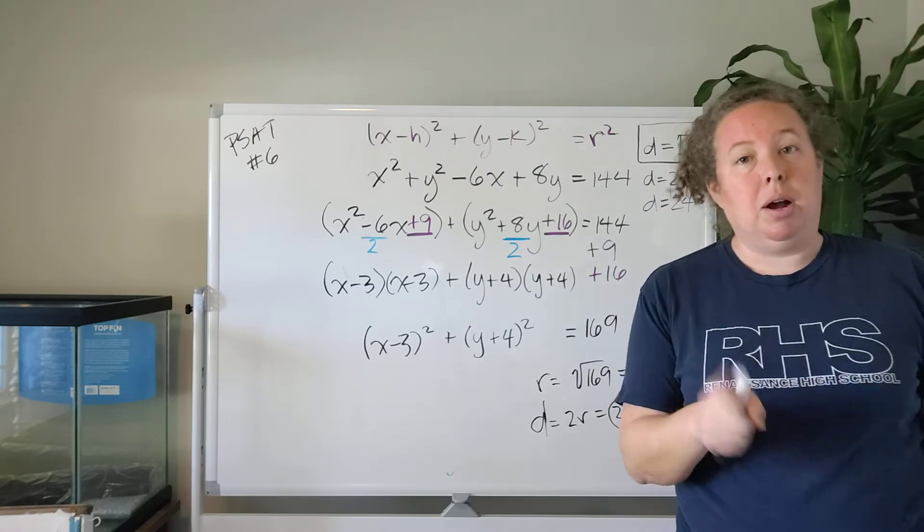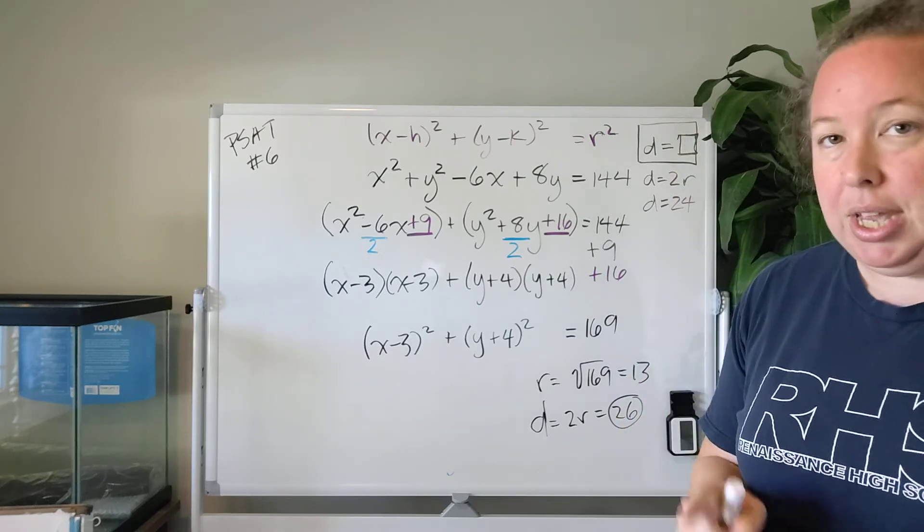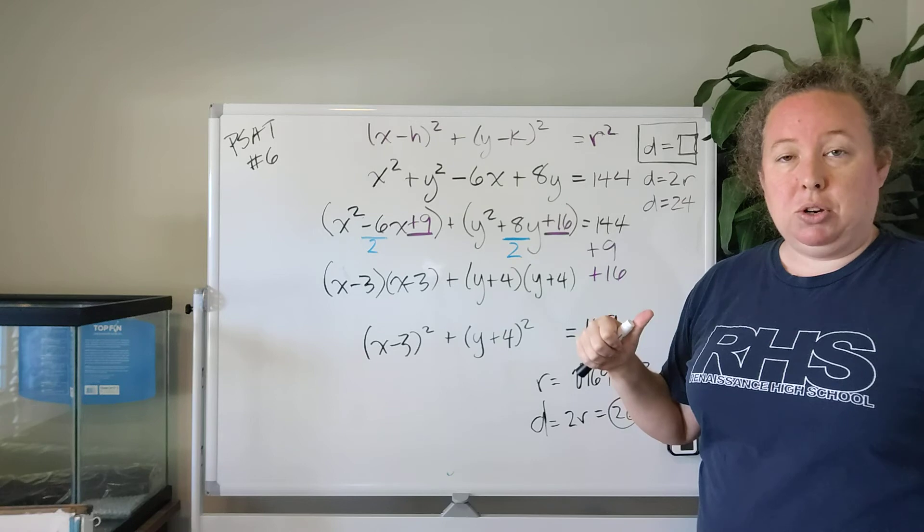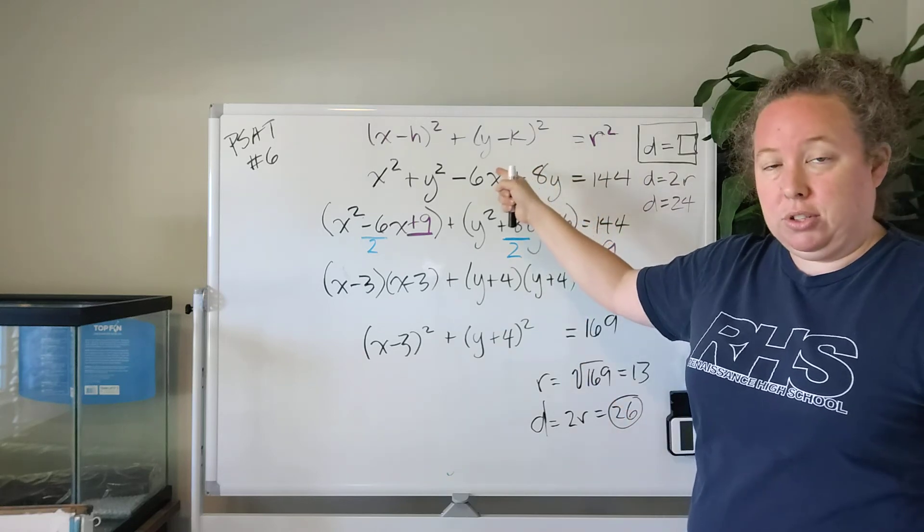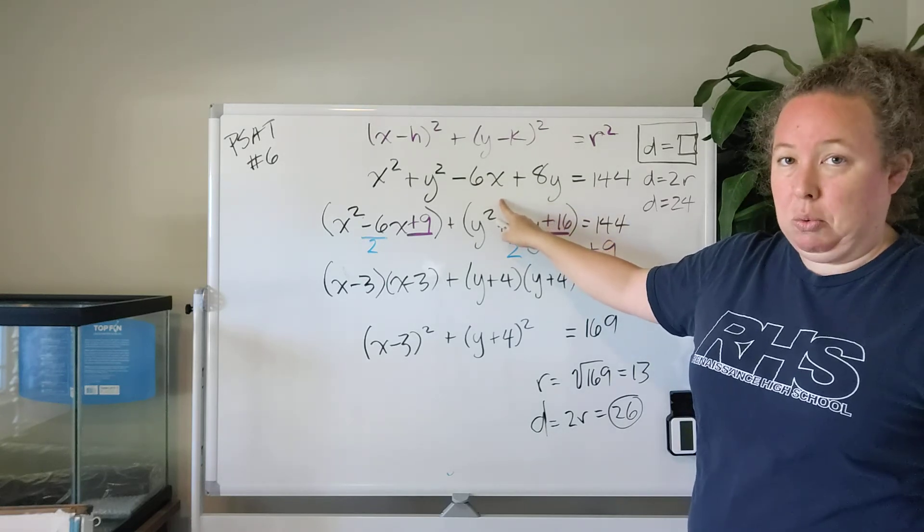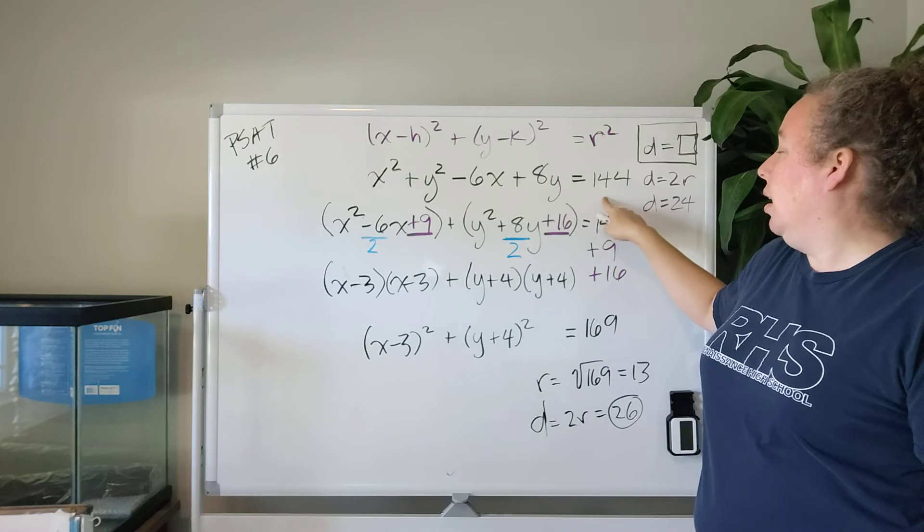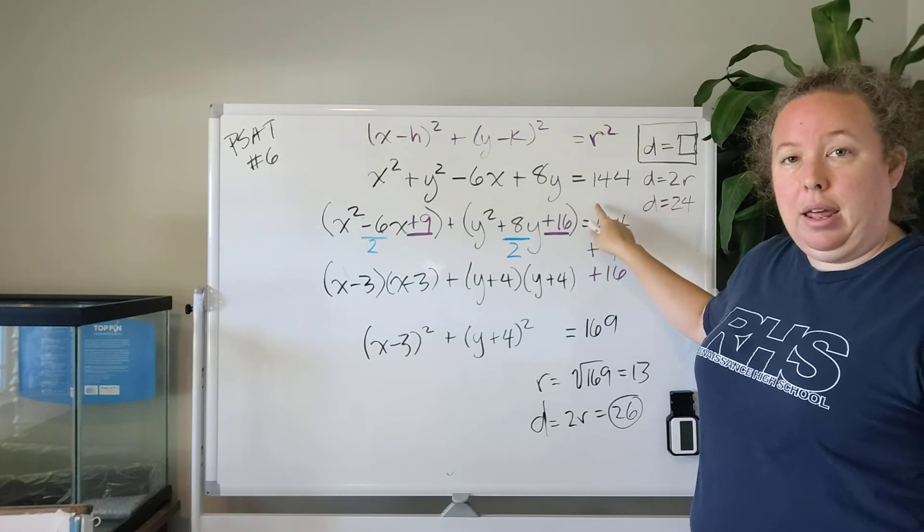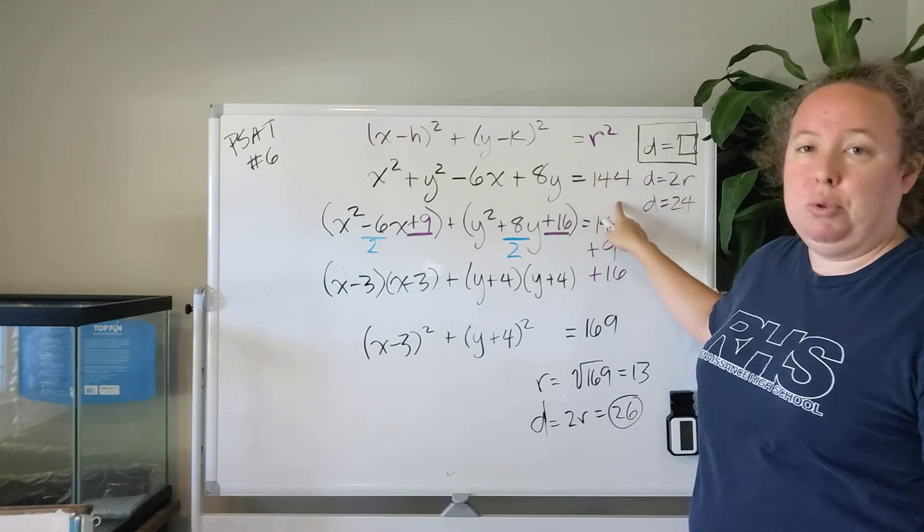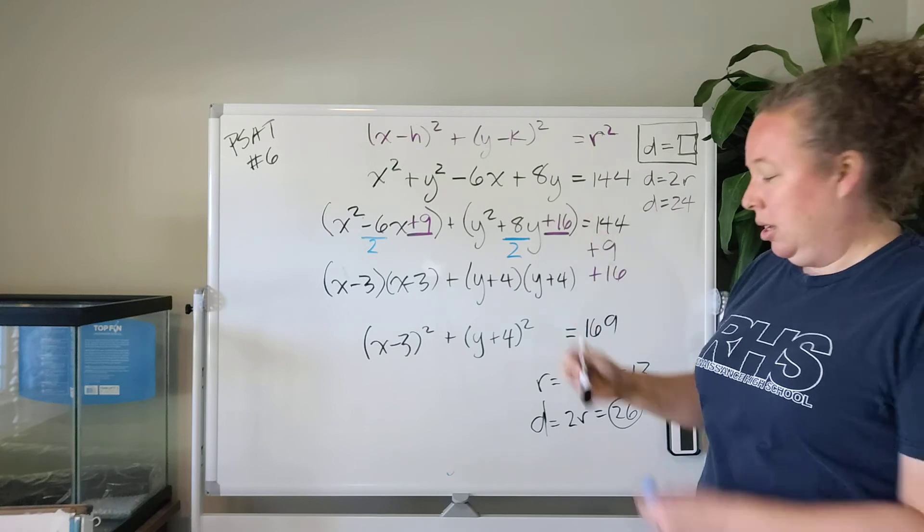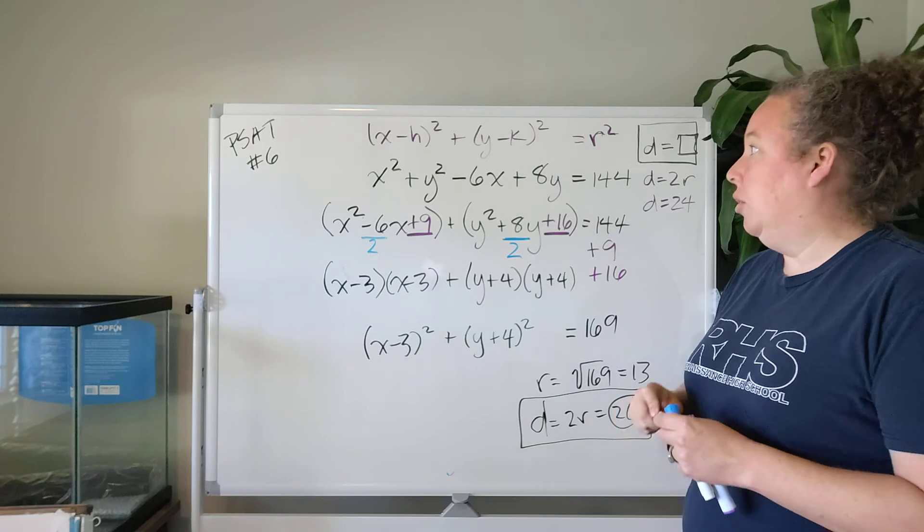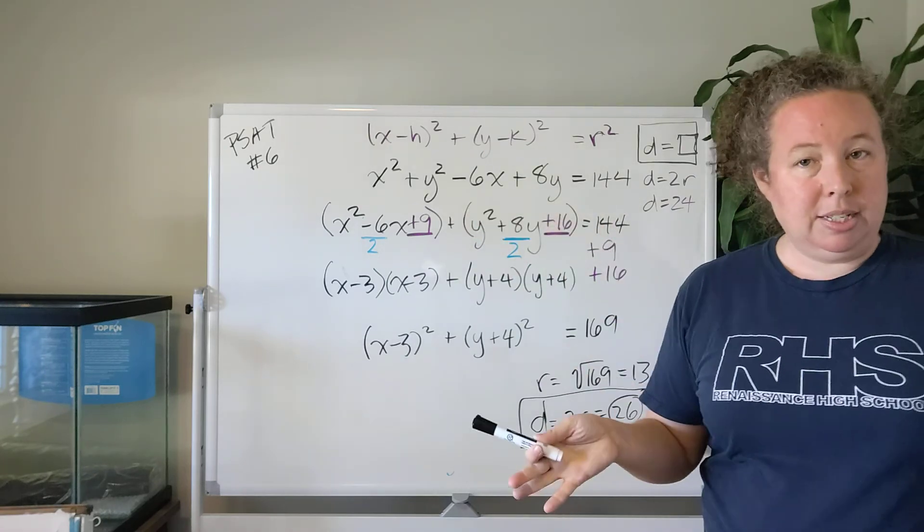So next time we have a problem like this and we're making an educated guess, if the exam is asking us to find the radius or the diameter of a circle based on the equation of a circle and we're given it in a format where we have to complete the square, we're going to want to guess something that's a little bigger than what we get if we just take the square root of whatever the original equation is equal to. In this case, 144. So in this case, the diameter of the circle given by this equation is going to be 26. I hope this helps.